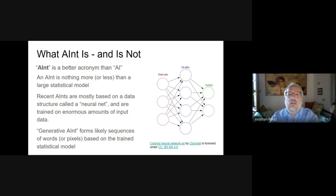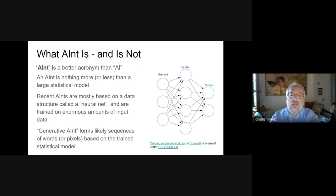AINTs are large and powerful statistical models, but there is nothing particularly new philosophically or structurally about them. What is new is how much data is used to train the models — a product of enormous datasets available today from the internet — and the data structures inside the programs. Data structures are things like spreadsheets, lists, or binary trees, which help manipulate stored data. Modern AINT often uses various forms of neural networks, which is a terribly misleading term.